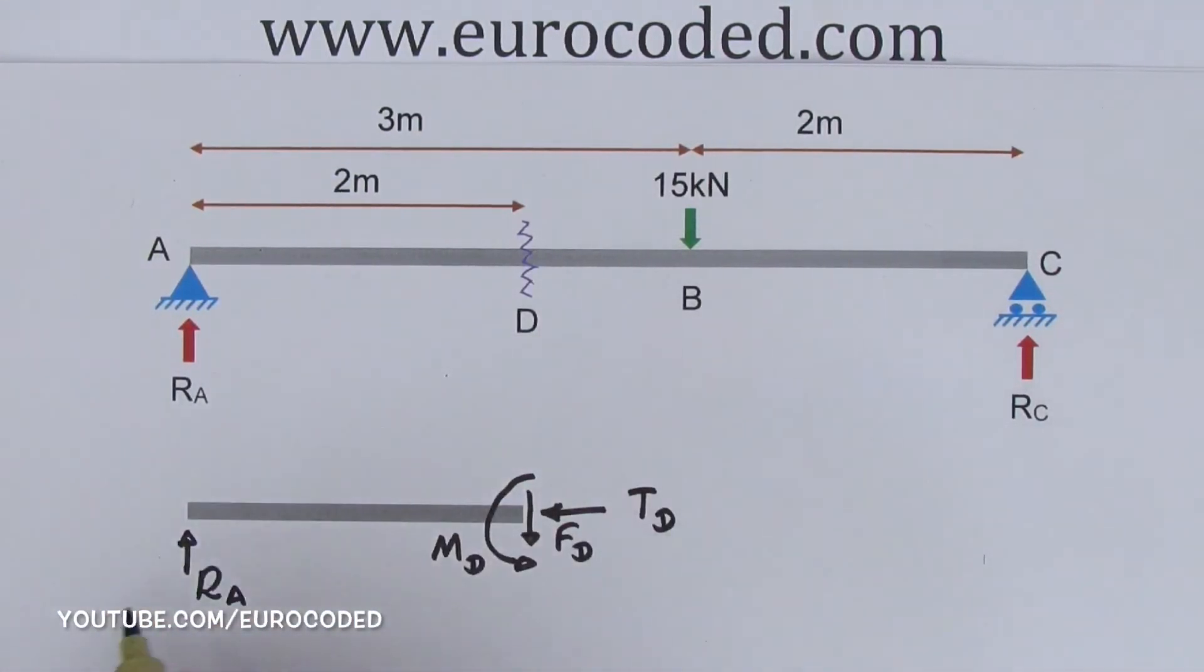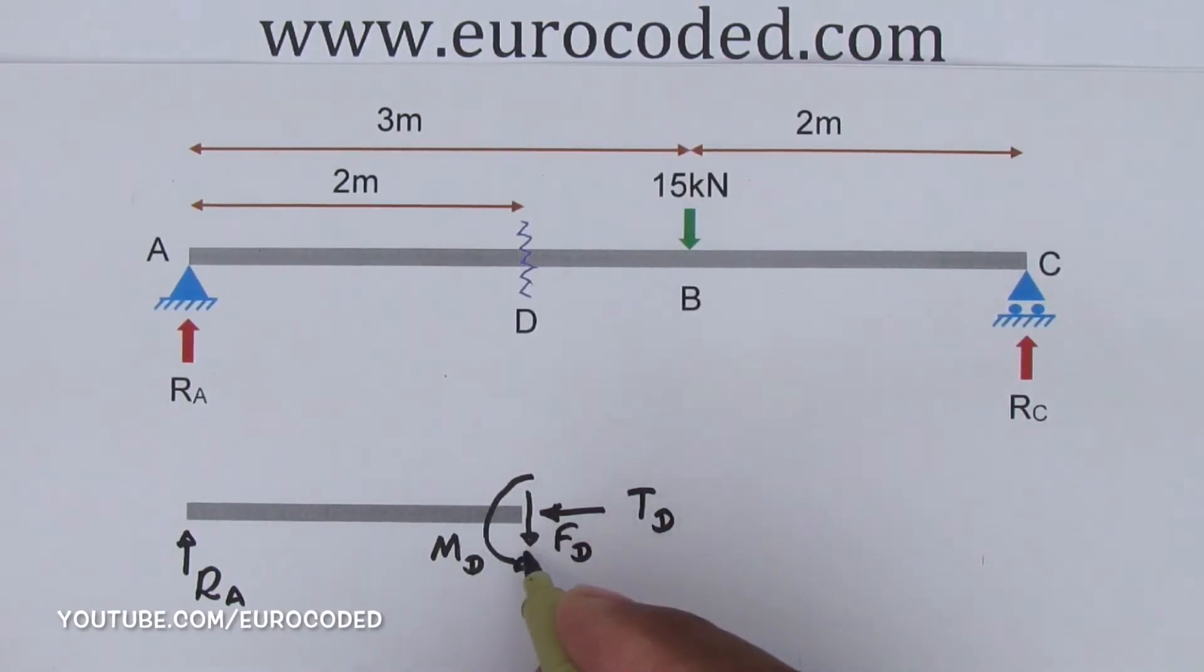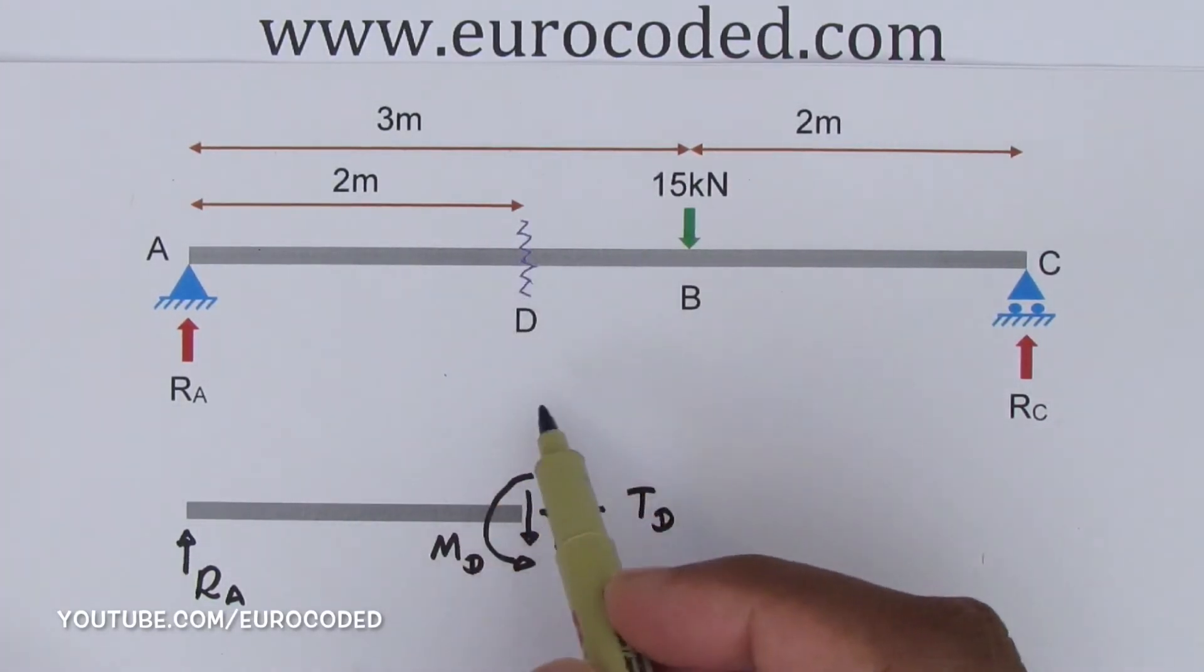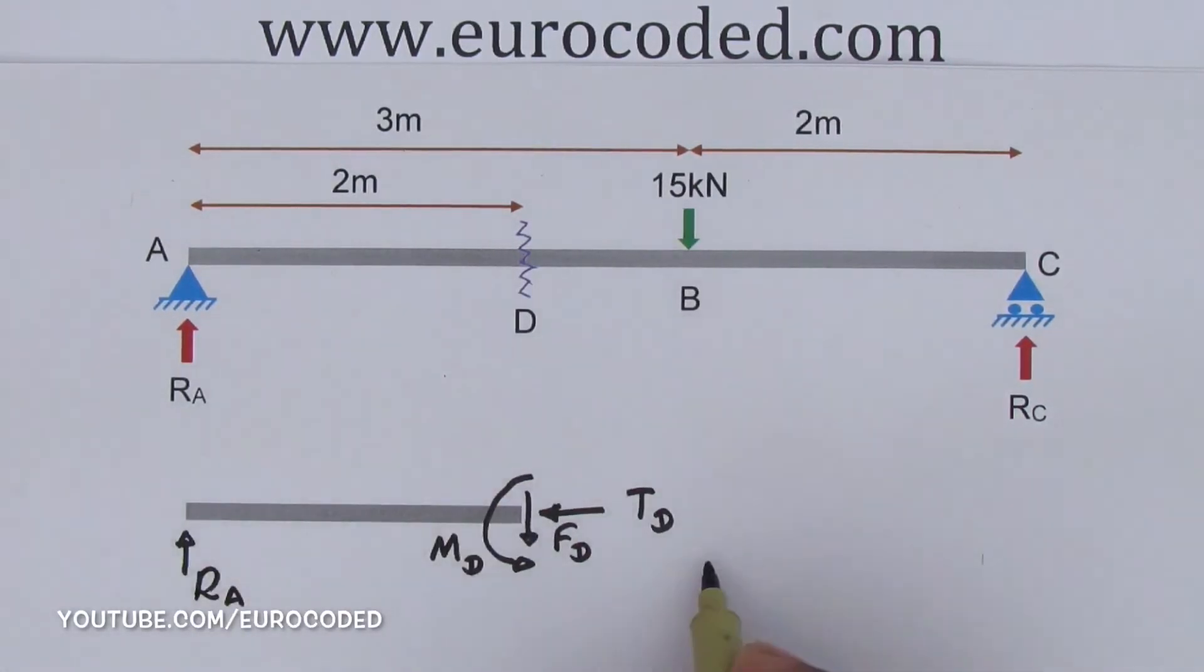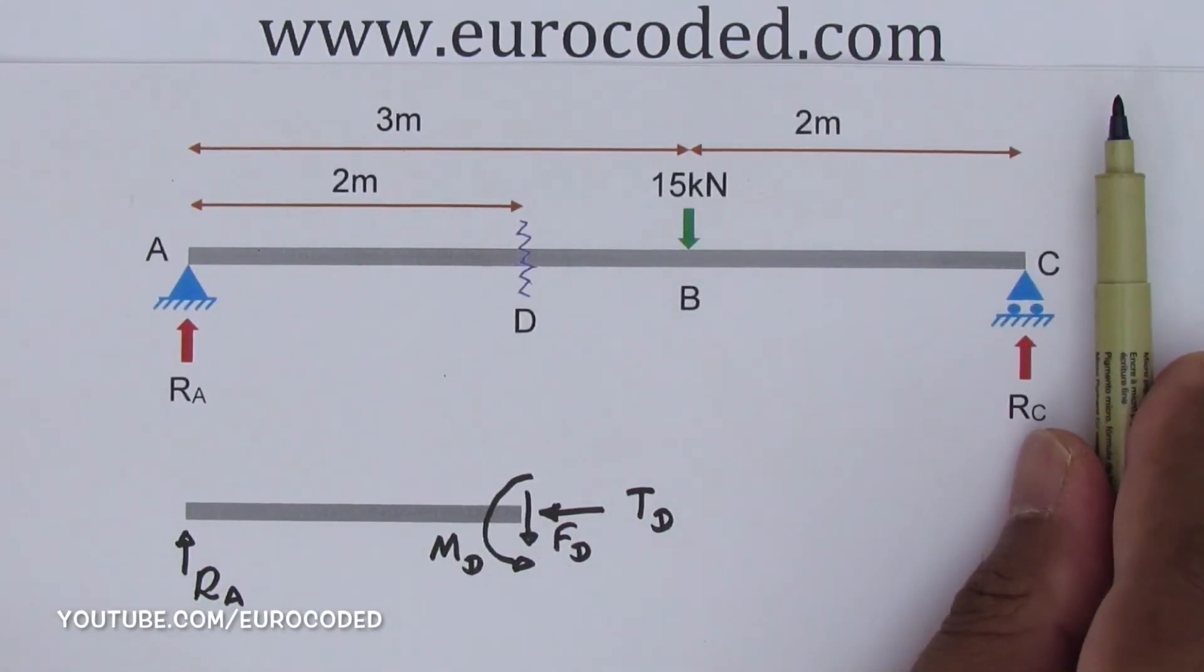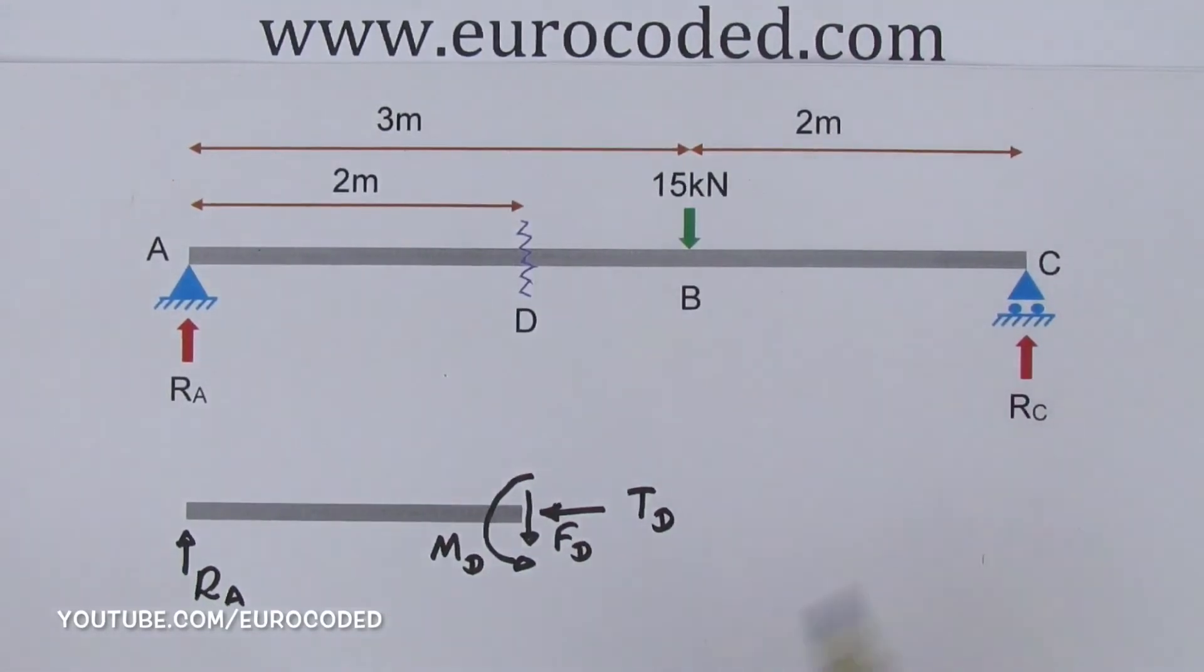Now we can use this free body diagram to calculate bending moment, shear force and axial force in the beam at this particular point where we have taken the cut. I have covered all that in a separate video where I explain how you can calculate bending moment, shear force and axial force. Please go check out that video. You could either click on this YouTube card here or follow the link in the description box below to check out that video.